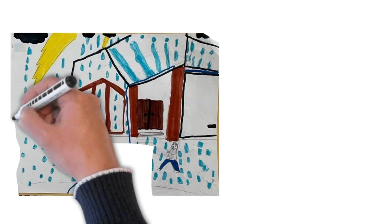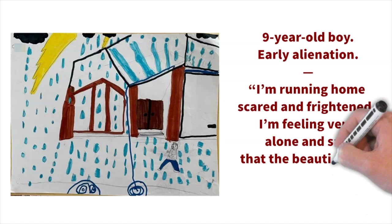A nine-year-old boy draws about his feelings in early alienation. I'm running home scared and frightened. I'm feeling very alone and sad that the beautiful day turned into a roaring storm.